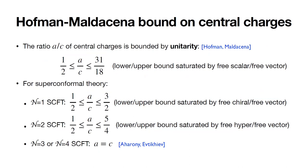The ratio A over C is bounded — constrained by unitarity, as demonstrated by Hofman and Maldacena. This ratio A over C is bounded below by 1/3 and above by 31/18. The lower bound is saturated by a free scalar field and the upper bound by a free vector field. With supersymmetry, the window becomes narrower. For N=1 supersymmetry, it's between 1/2 and 3, with the lower bound saturated by a free chiral multiplet and the upper by a free vector multiplet. For N=4 super Yang-Mills, A and C must be identical.